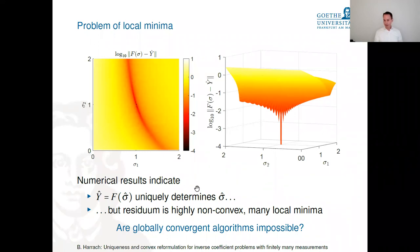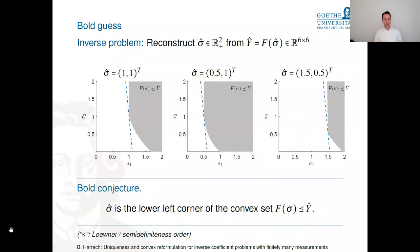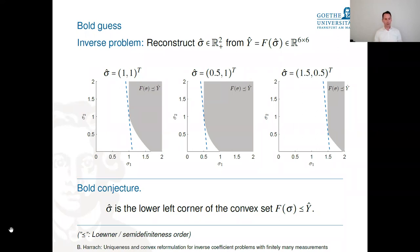Now I show another image. The gray region is the set of all σ where F(σ) ≤ ŷ in the Löwner (positive semi-definite) order: i.e., ŷ − F(σ) is positive semi-definite. I plot this for three different true conductivity values: (1,1), (3/2,1), and (1,1/2). In each case, the true conductivity sits at the lower-left corner of this gray set.